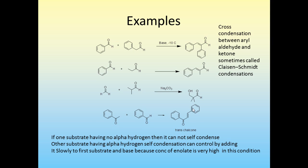The next topic is examples of aldol condensations. Cross-condensation between an aldehyde and a ketone is sometimes called the Claisen-Schmidt condensation — generally an aryl aldehyde with a ketone, like benzaldehyde with acetophenone. This gives the trans chalcone product. Benzaldehyde has no alpha-hydrogen, so it cannot condense with itself under simple base conditions such as sodium carbonate or barium hydroxide.